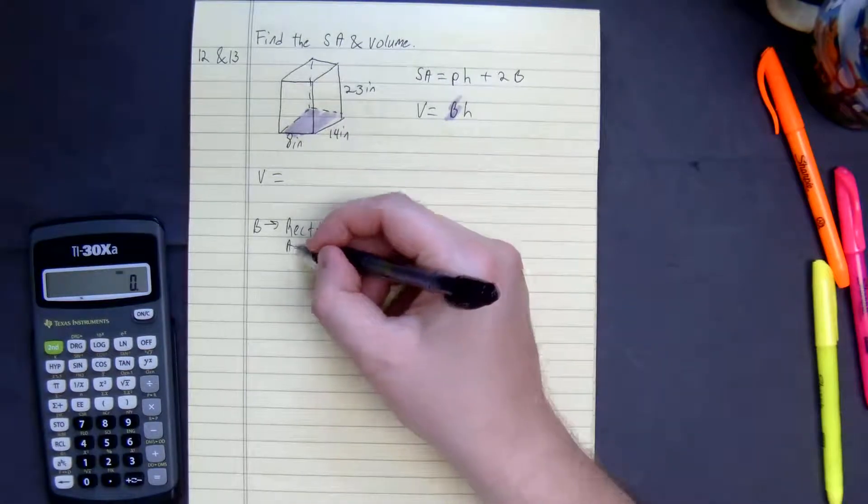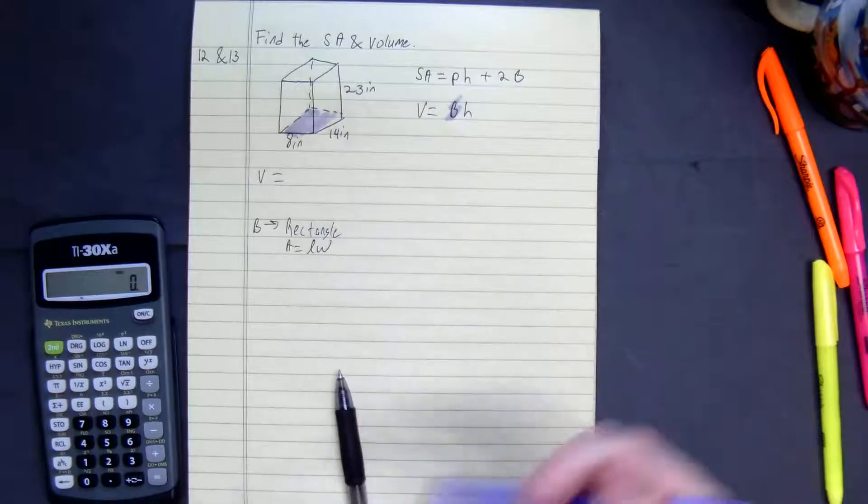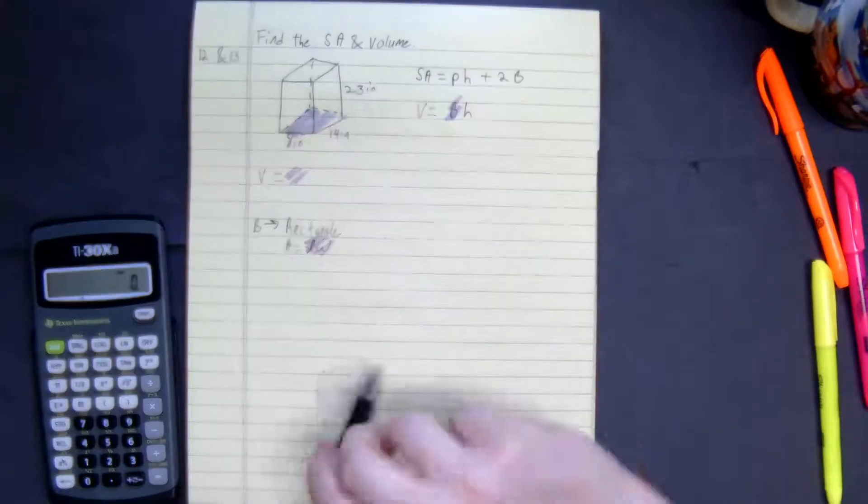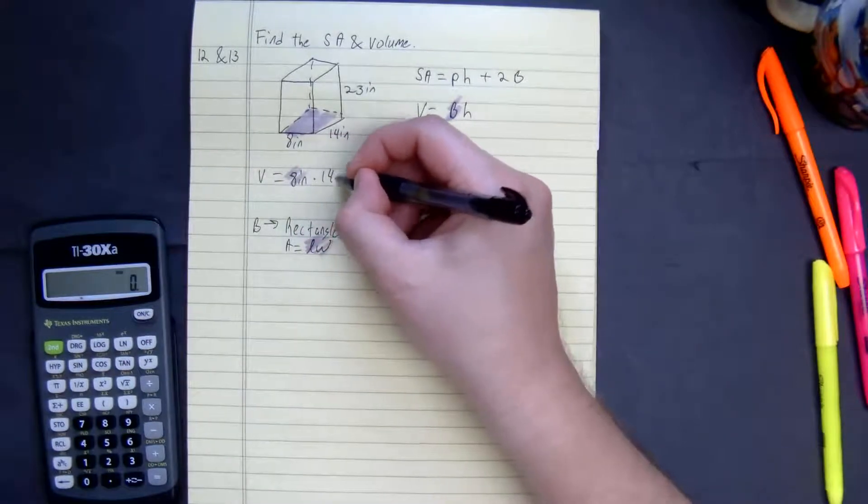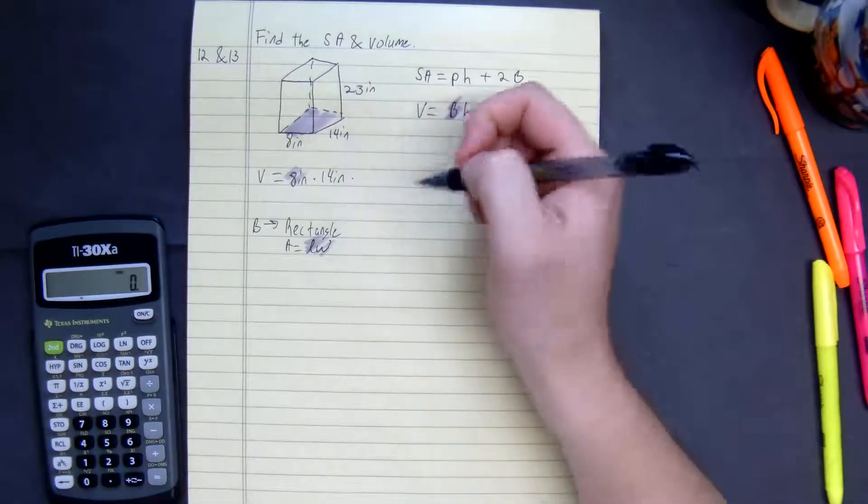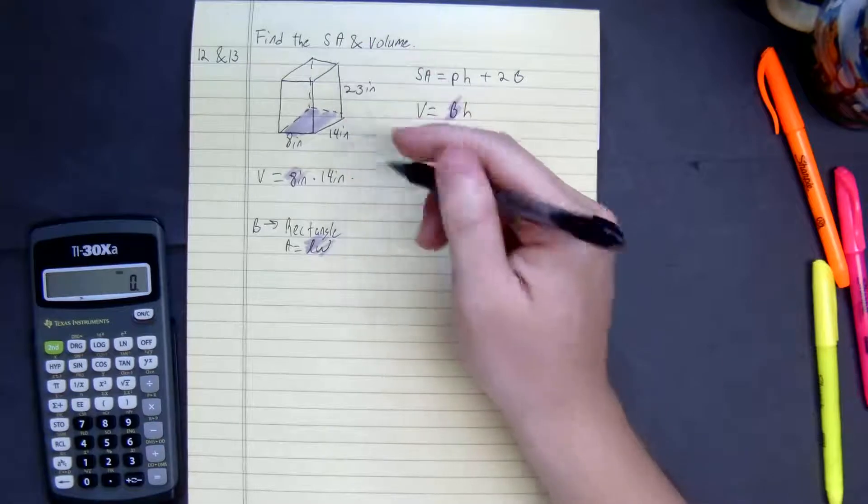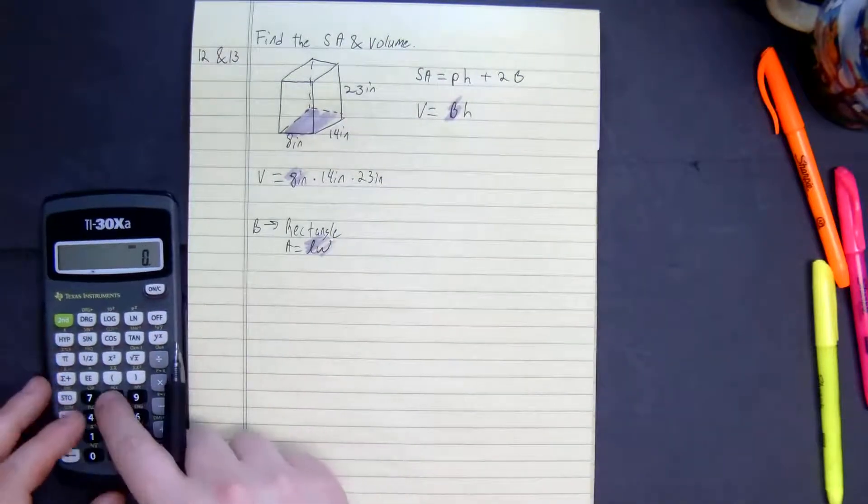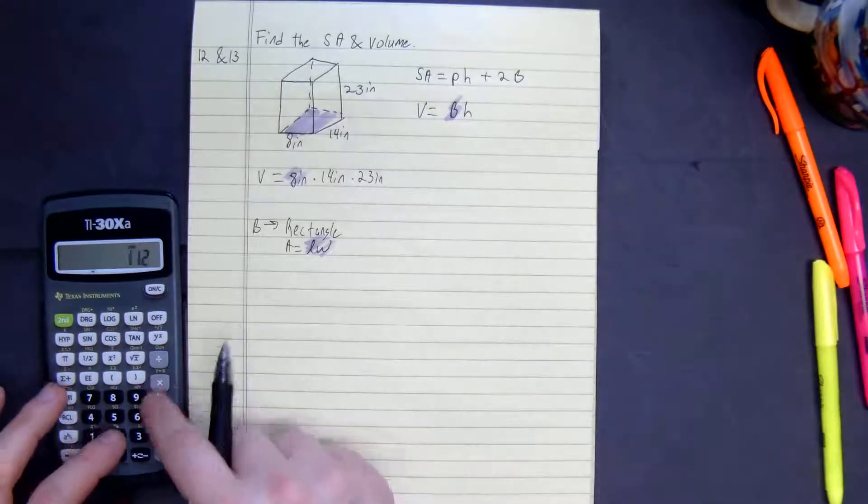And our rectangle's formula for area is equal to length times width. So I'm just going to plug this length times width here. So it's going to be 8 inches times 14 inches times the height, which is 23 inches. So what we do, 8 times 14 times 23.